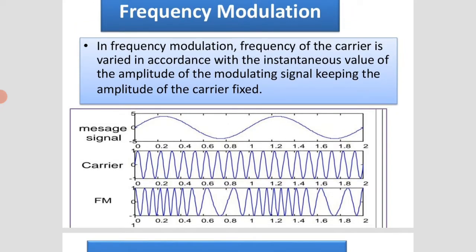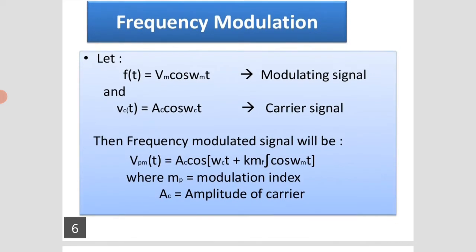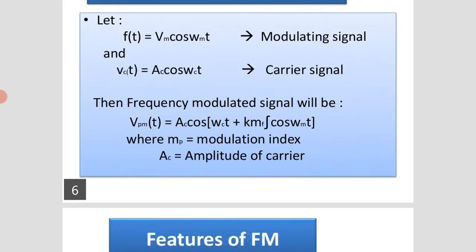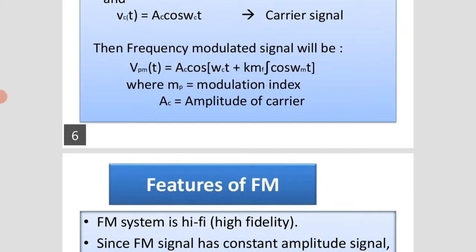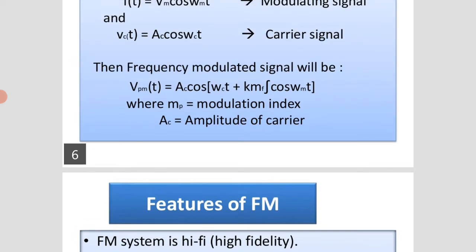In frequency modulation, the frequency is maximum in the positive half cycle, and the frequency is minimum in the negative half cycle. Let f(t) = Vm cos(ωmt), that is the modulating signal, and Vc(t) = AC cos(ωct), that is the carrier signal. Then the frequency modulating signal will be VFM(t) = AC cos(ωct + Km × integration of cos(ωmt)), where MF is the modulation index and AC is the amplitude of the carrier.